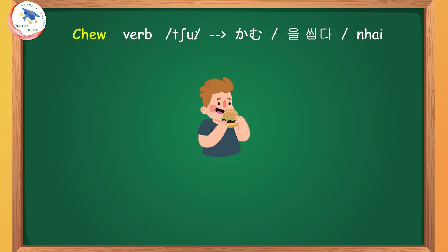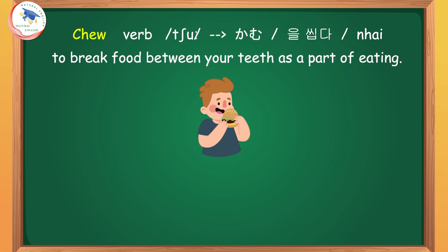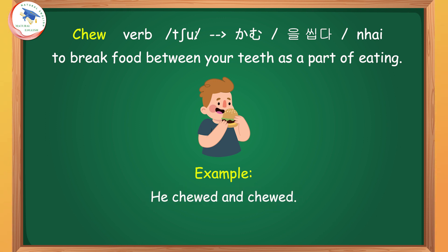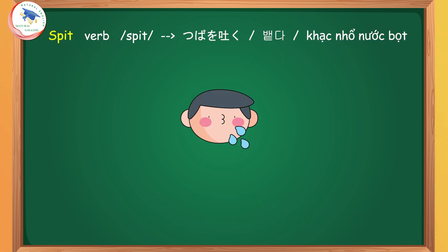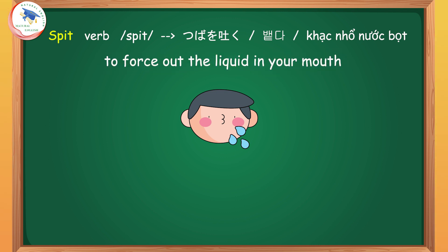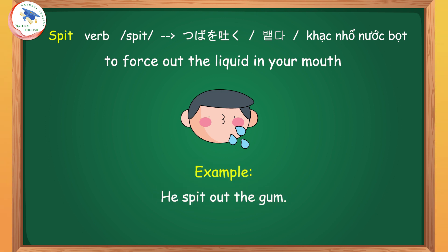Chew: to break food between your teeth as a part of eating. Example: He chewed and chewed. If you chew your food properly, it is easier to digest. Spit: to force out the liquid in your mouth. Example: He spit out the gum. He took a mouthful of coffee and then spat it out.